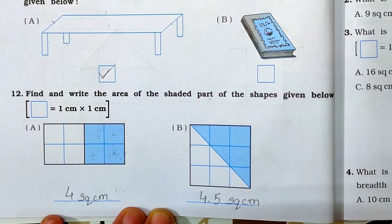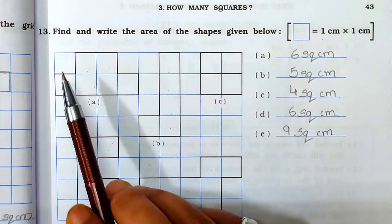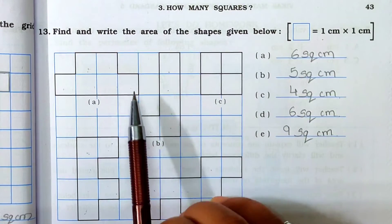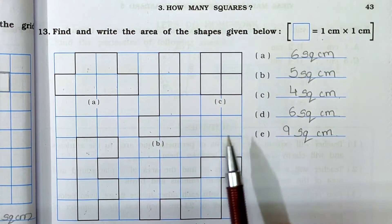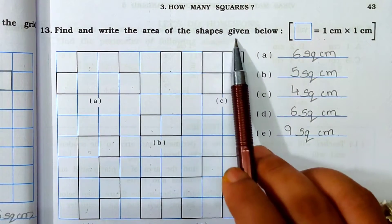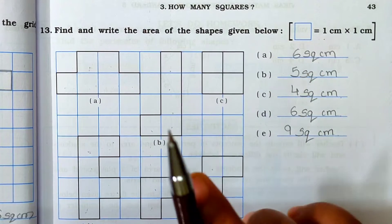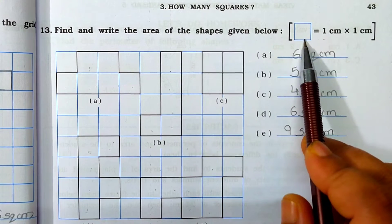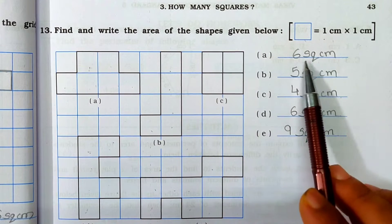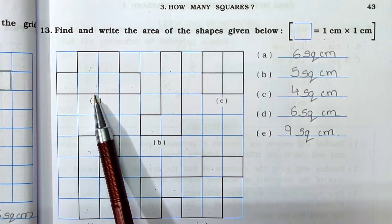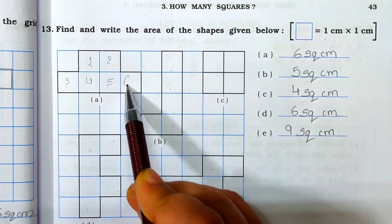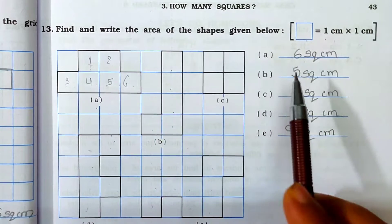Now we will see Main 13. First of all read the question: Find and write the area of the shapes given below. Here the shapes are given, you have to find out the area, and write here A, B, C, D, E. 1 square is equal to 1 centimeter into 1 centimeter. Write the unit in square centimeter. First of all see A: how many boxes are covered? 1, 2, 3, 4, 5 and 6. Six boxes are covered. So A is 6 square centimeter.